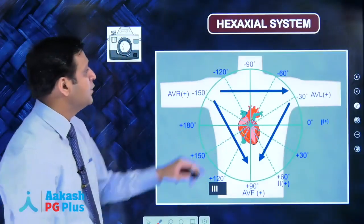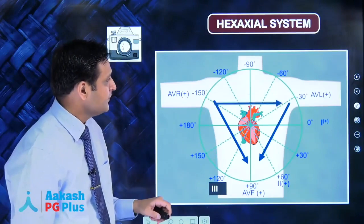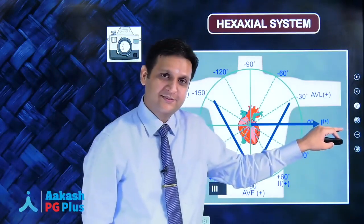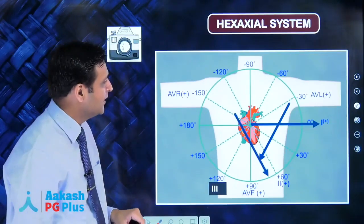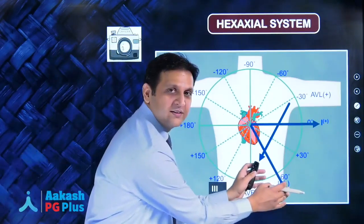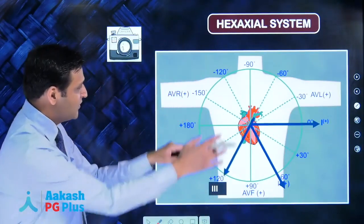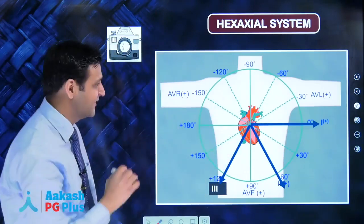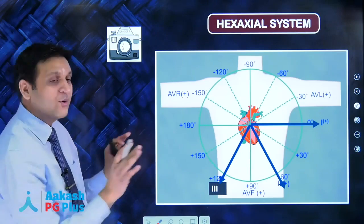This is lead one - drag it down and bring it here. This is lead two - drag it down, bring it here. This is lead three - drag it down, bring it here. Now you have a center.